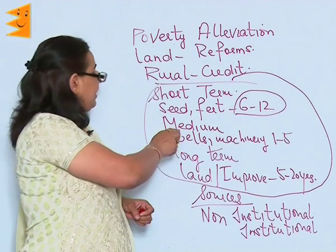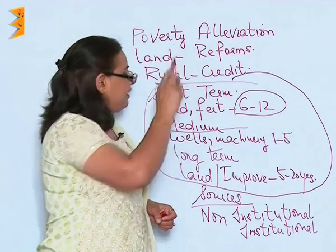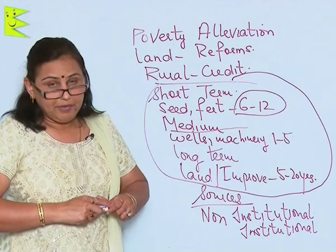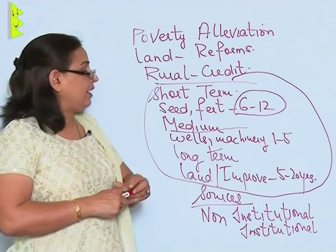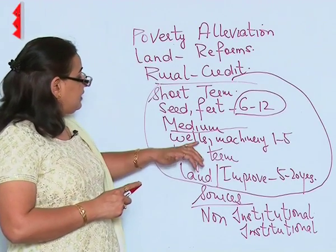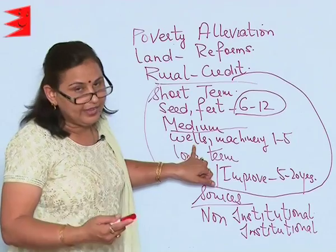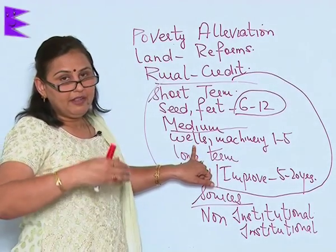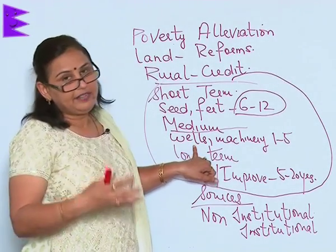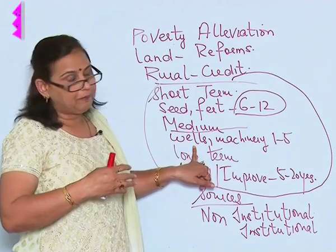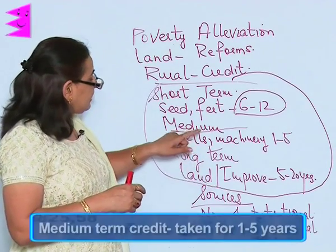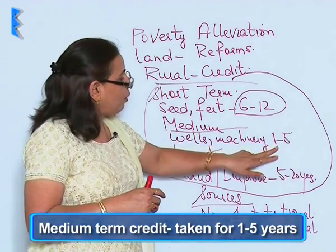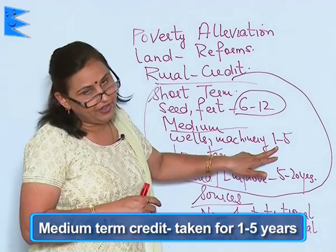The next credit is called medium-term credit in rural India. It is taken for digging wells, buying machineries, tractors, threshers, and so on. This kind of credit is taken for 1 to 5 years.